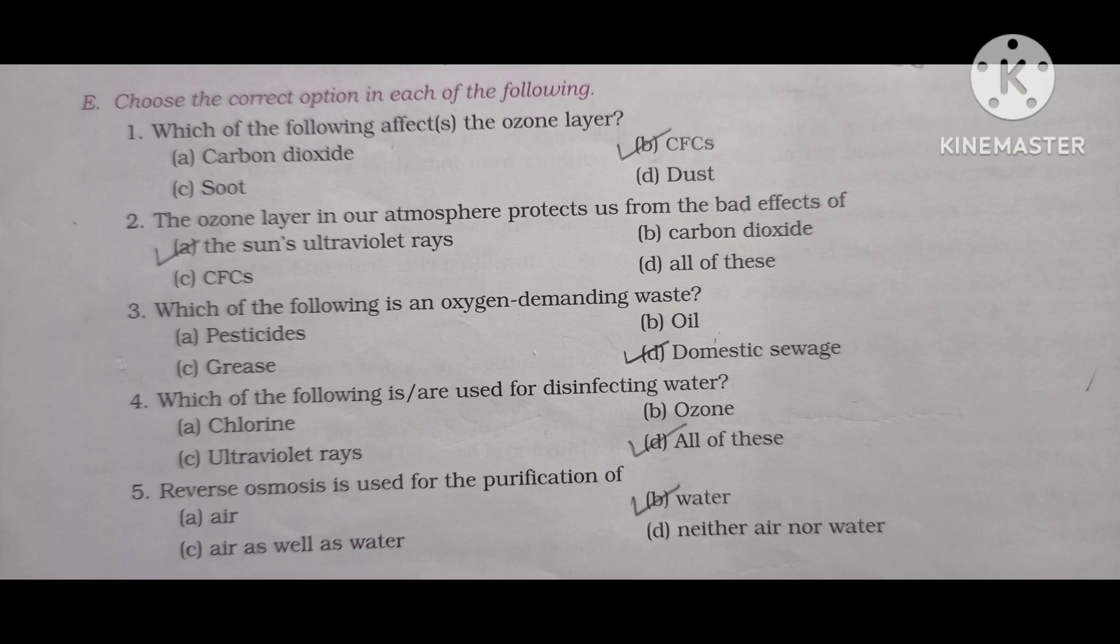Exercise E. Choose the correct option in each of the following. Number 1: Which of the following affects the ozone layer? Options are carbon dioxide, CFCs, soot and dust. So correct answer is CFCs, chlorofluorocarbons.